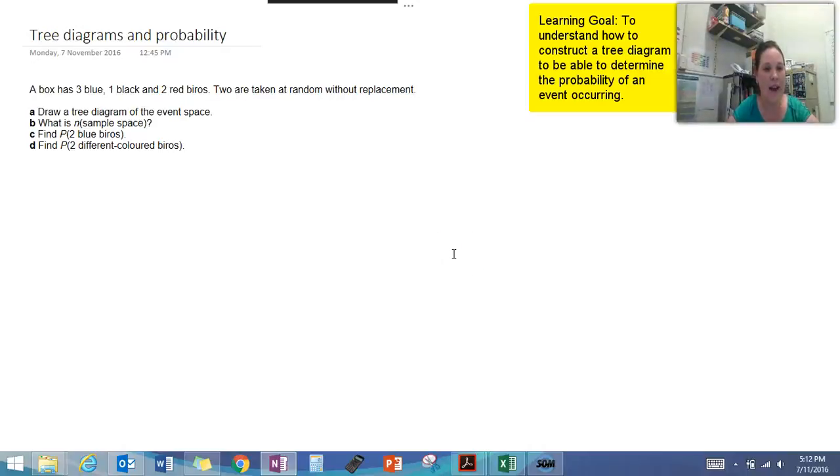Hi guys, this video is about how to use a tree diagram to predict the probability of an event occurring. For this particular question we have a box of blue, black, and red biros, with different amounts, and we're going to take them out without replacement, so we're not going to put them back.